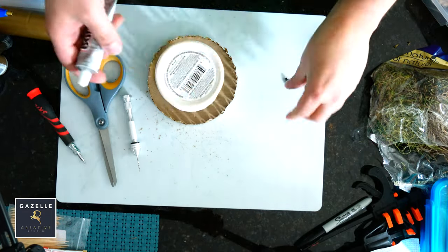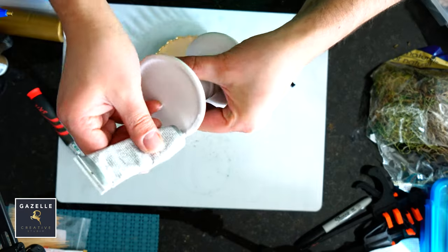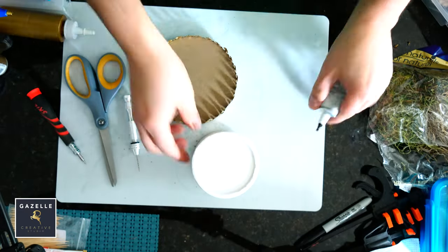Using E6000 glue, I will glue that candle holder to the base of the cloche and let it dry for 24 hours.